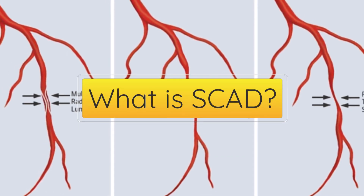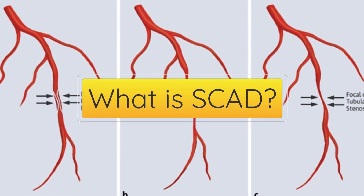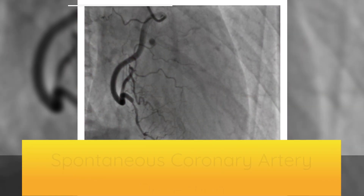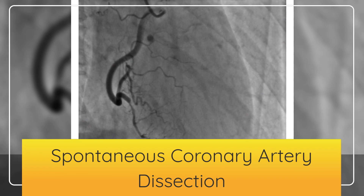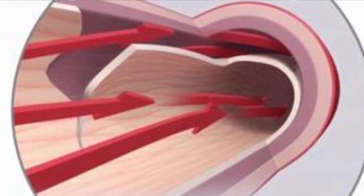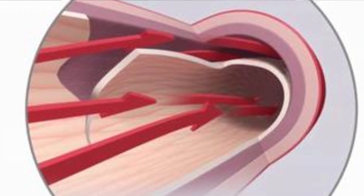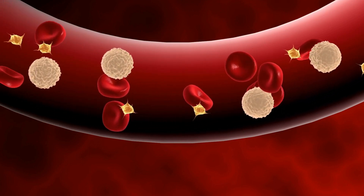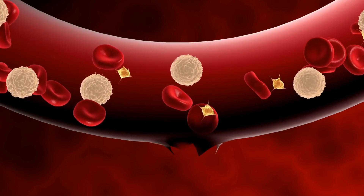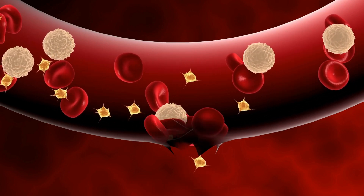What is spontaneous coronary artery dissection, also known as SCAD? Spontaneous coronary artery dissection occurs when there is a separation or tear in the wall of a coronary artery. The tear can occur in any one of three layers of the coronary artery wall. Blood seeps between the layers, and trapped blood causes the artery to bulge inward, which blocks or slows blood flow to your heart.